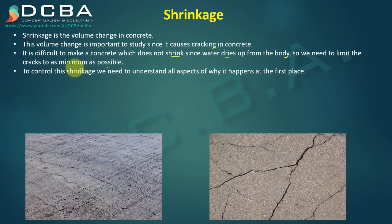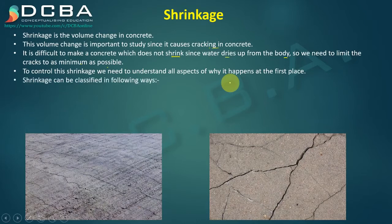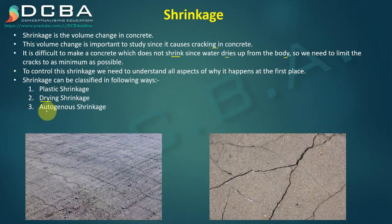To control this shrinkage, we need to understand all aspects of why it happens in the first place. If we understand that, it will be easier to control it. There are four types of shrinkage: first is plastic shrinkage, second is drying shrinkage, third is autogenous shrinkage, and fourth is carbonation shrinkage. We will be seeing all of these one by one.